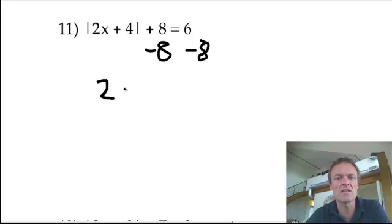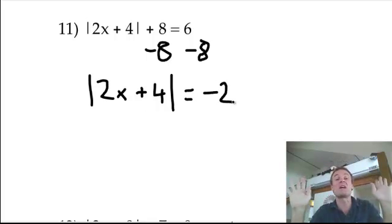So this 2x plus 4, which is still inside an absolute at the moment, that equals negative 2. Okay, right, stop right there.